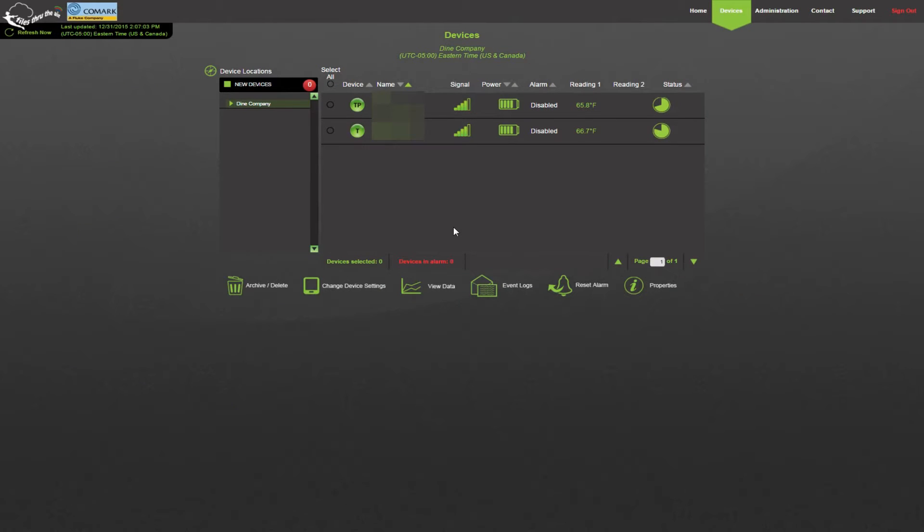And now we would like to show you some of the features of the Comark cloud account. From the cloud account you can control your devices and view the data your devices have recorded. Here in my cloud account you can see that I have two wireless sensors running. From here I can select which device I want to use and change device settings.